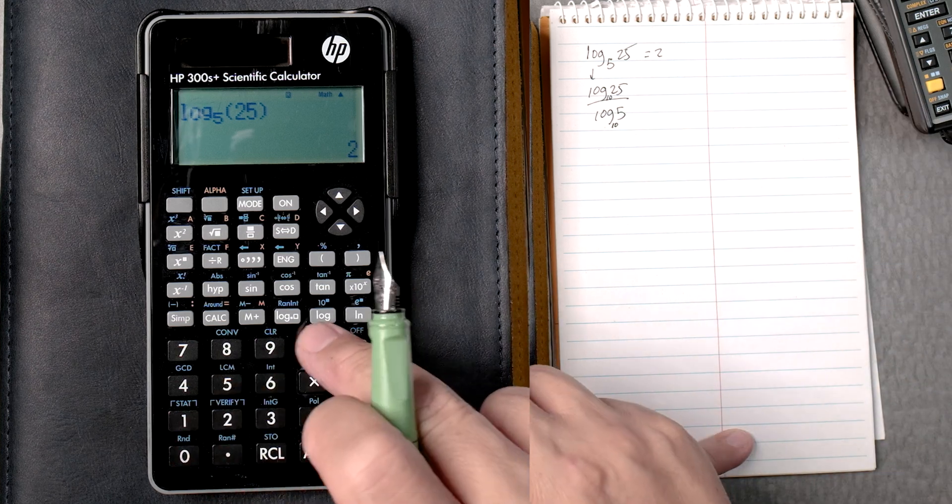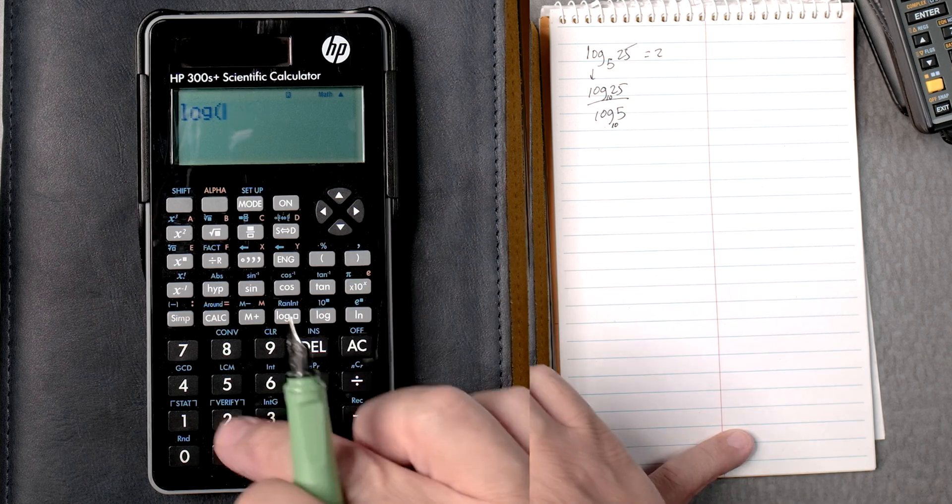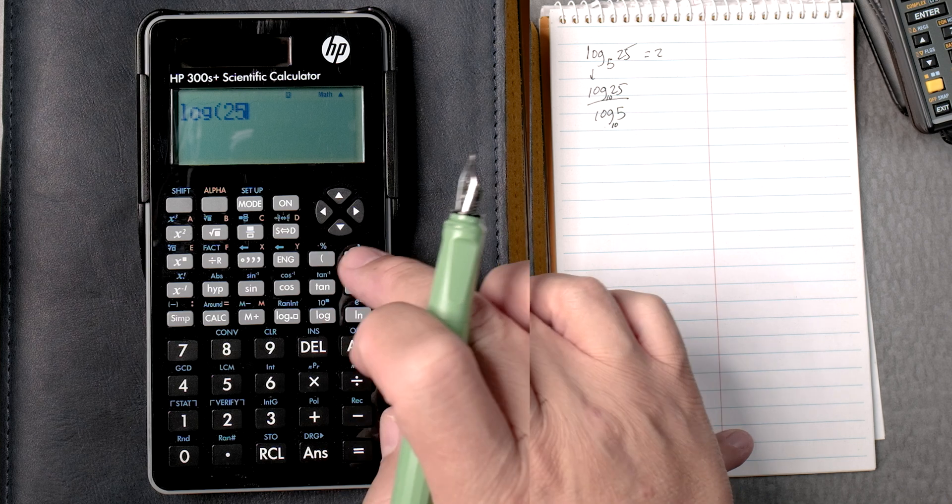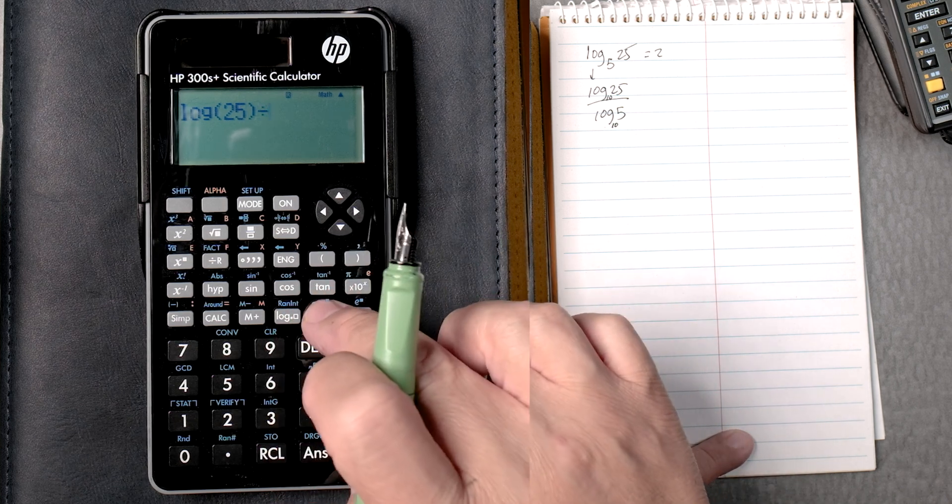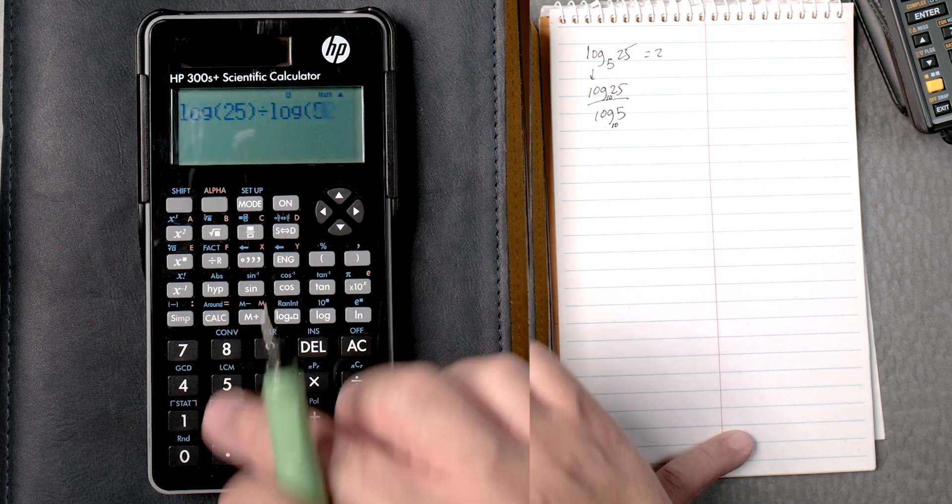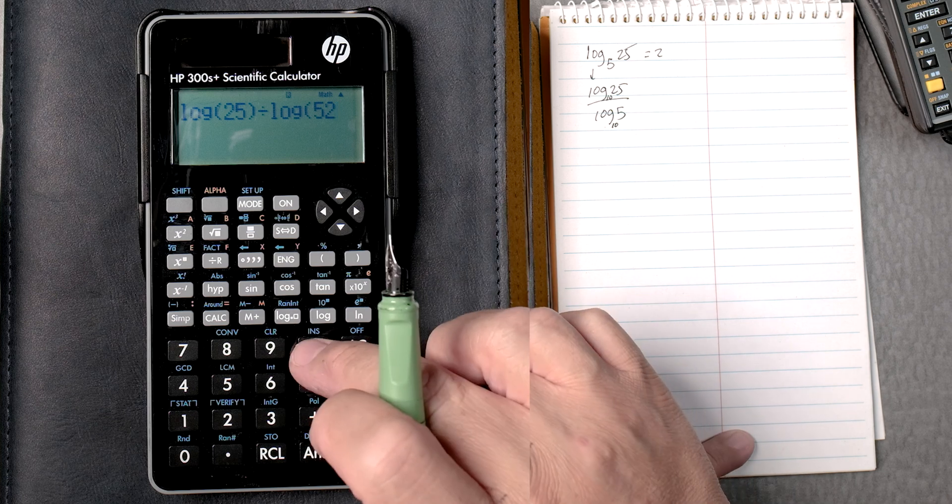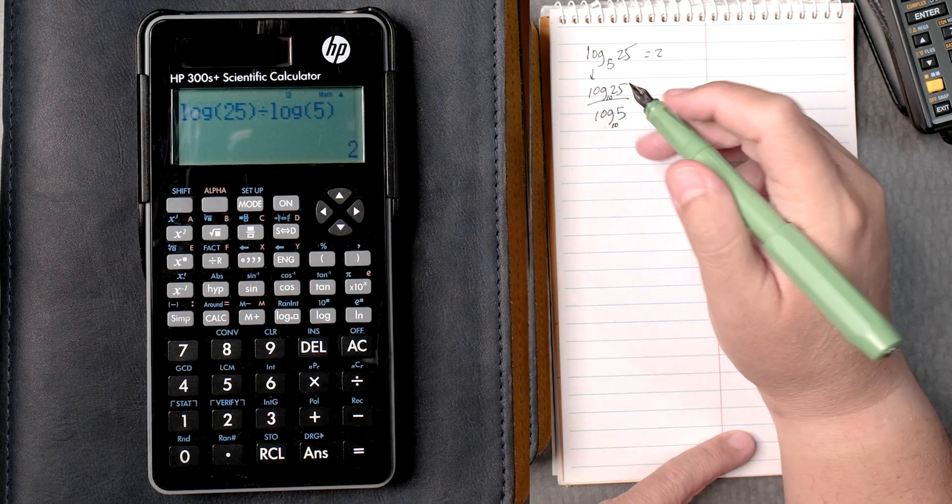So if I say this log right here, log 25, close it, close parenthesis, divided by log 5. Let's see, let's delete, and then parenthesis equals 2, same answer.